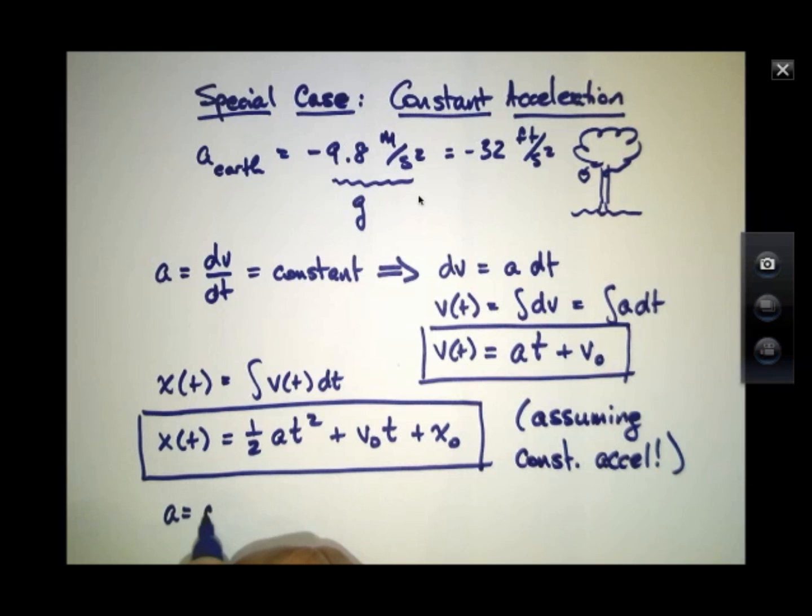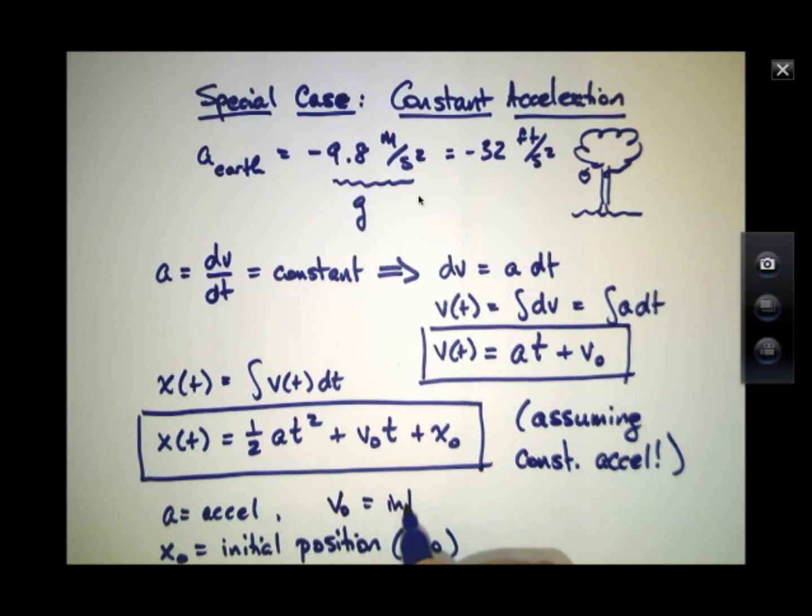A is acceleration, x not is the initial position at time t equals 0, v not is the initial velocity at time t equals 0.